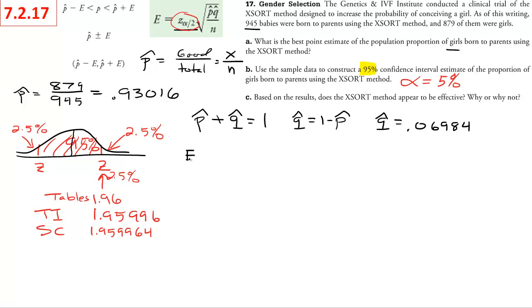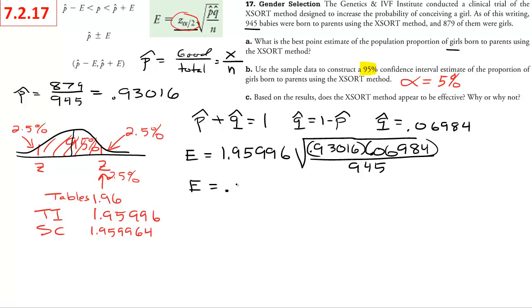So now we have everything. E equals the 1.95996 times the square root of 0.93016 times 0.06984, and then all over 945. Put that in your calculator, and you get that E is equal to 0.01625, and then it goes on, but that's enough. Five should be plenty for whatever we want to do, or roughly 1.6% is our E. That's our margin of error.